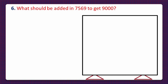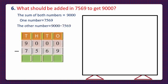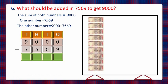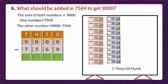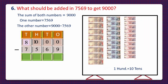The sum of both numbers is 9000 and one number is 7569. We have to calculate the other number, and for that we will subtract 7569 from 9000. Let's take the 9000-rupee notes. Since 1000 equals 10 hundreds, we take 10 hundreds instead of a 1000-rupee note — hundreds become 10 and thousands reduce from 9 to 8. Since 100 equals 10 tens, we take 10 tens instead of a 100-rupee note — tens become 10 and hundreds reduce from 10 to 9.